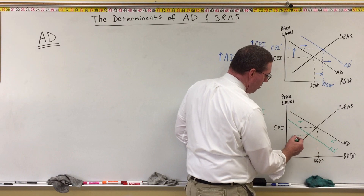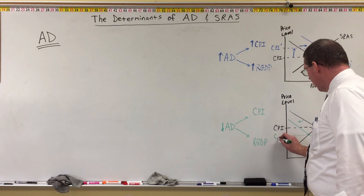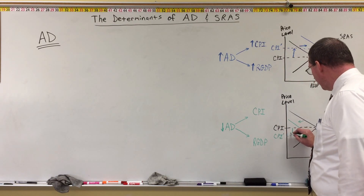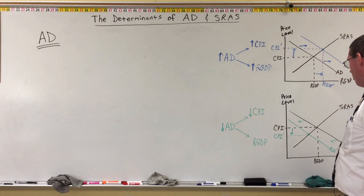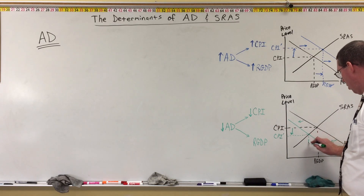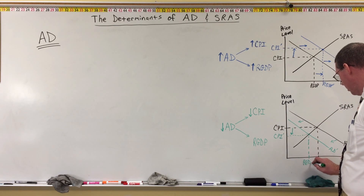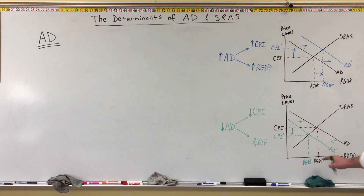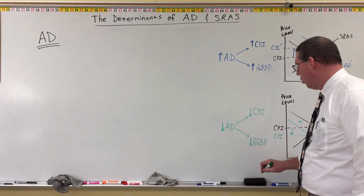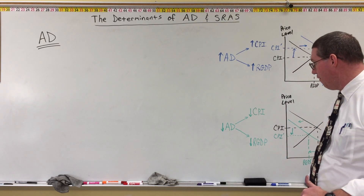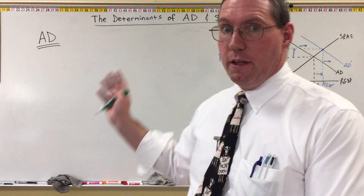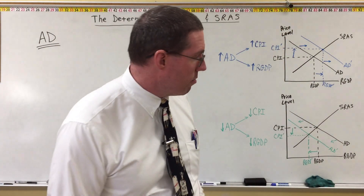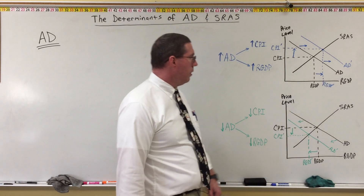Here's our new intersection point of the short-run aggregate supply curve and the aggregate demand curve. CPI prime — the consumer price index — has gone down. A decrease in aggregate demand leads to a decrease in the consumer price index. Our output is also going to decrease — we'll have a decrease in real GDP. Output in the economy will go down. We will produce less stuff when aggregate demand decreases, which makes sense. If people are demanding less, businesses are going to produce less, sell less, and people will consume less.